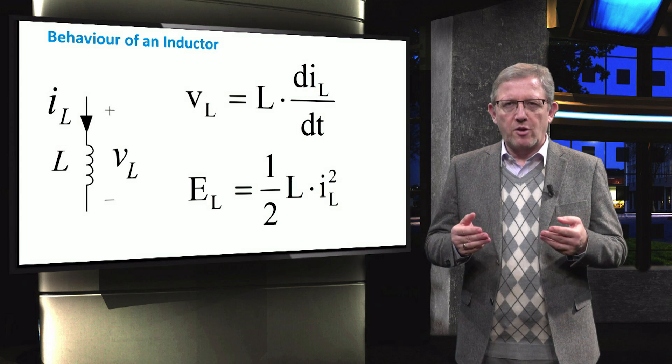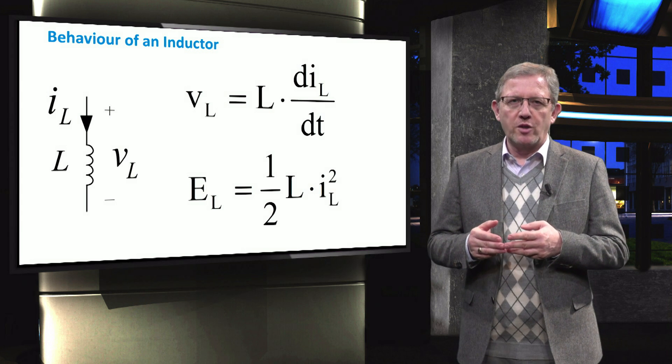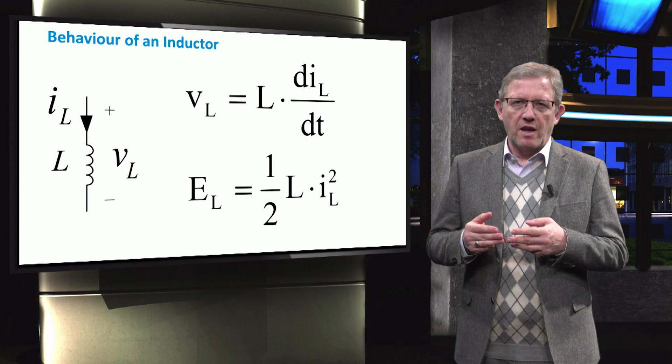While the capacitor is used in parallel to maintain the level of DC voltage, an inductor can be employed in series to maintain the level of DC current.